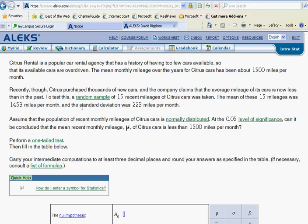To test this, a random sample of 15 recent mileages of Citrus cars was taken and the mean of these 15 mileages was 1,453 miles per month with a standard deviation of 223. Assume the population of recent monthly mileages is normally distributed. At the 0.05 level of significance, can it be concluded that the mean recent monthly mileage mu of Citrus cars is less than 1,500 miles as claimed?